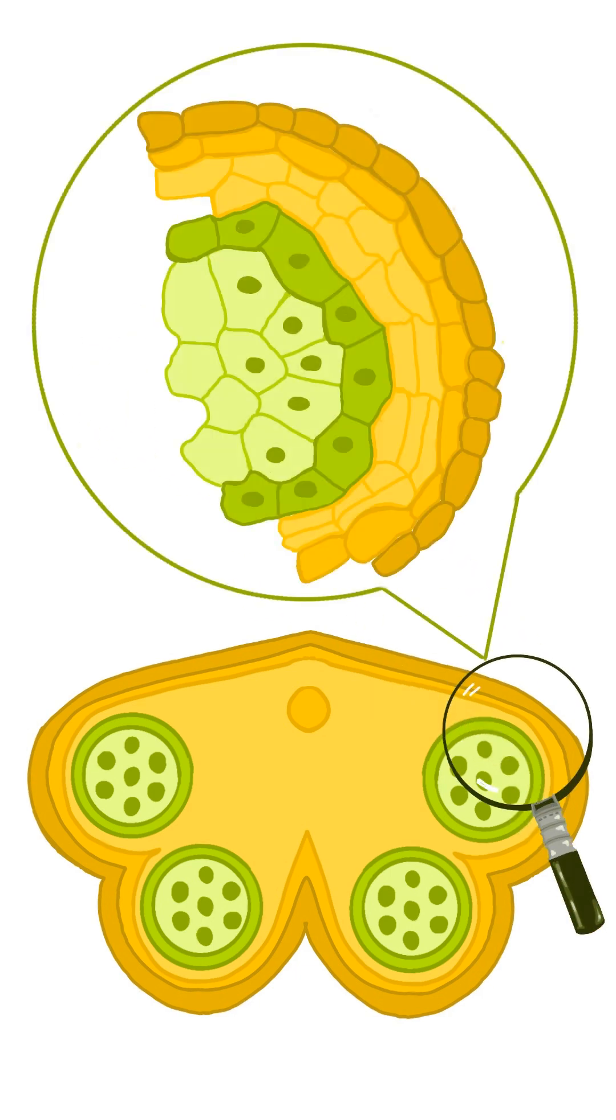Let's take a closer look at the layers of the microsporangial wall, which consist of four distinct layers: the epidermis, endothecium, middle layers, and tapetum.